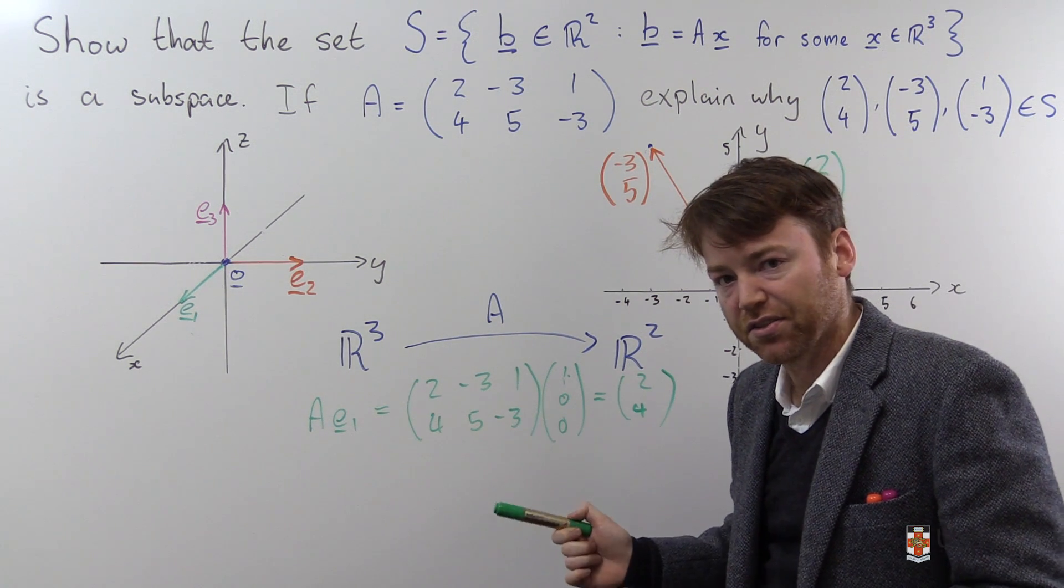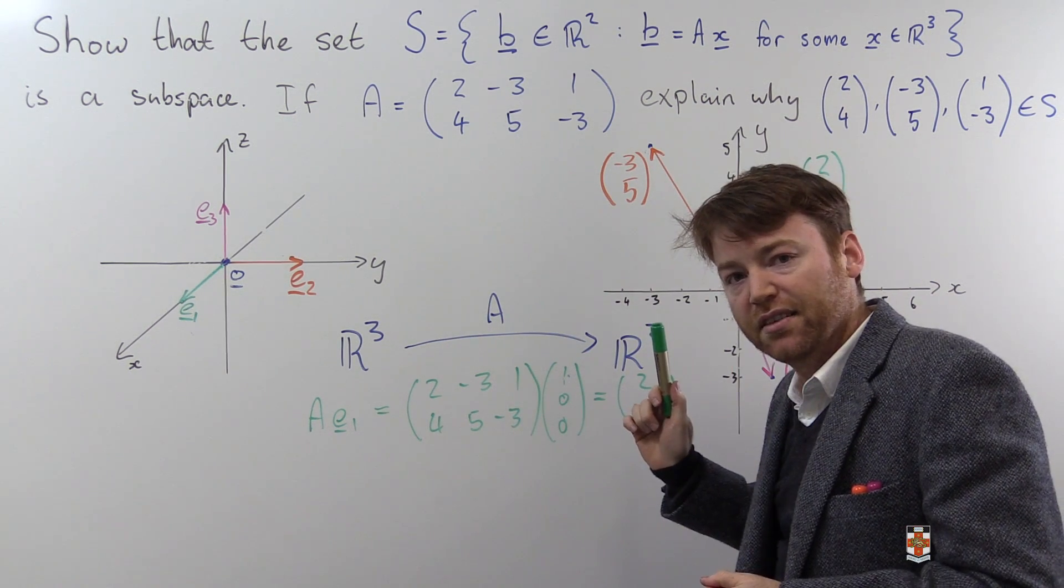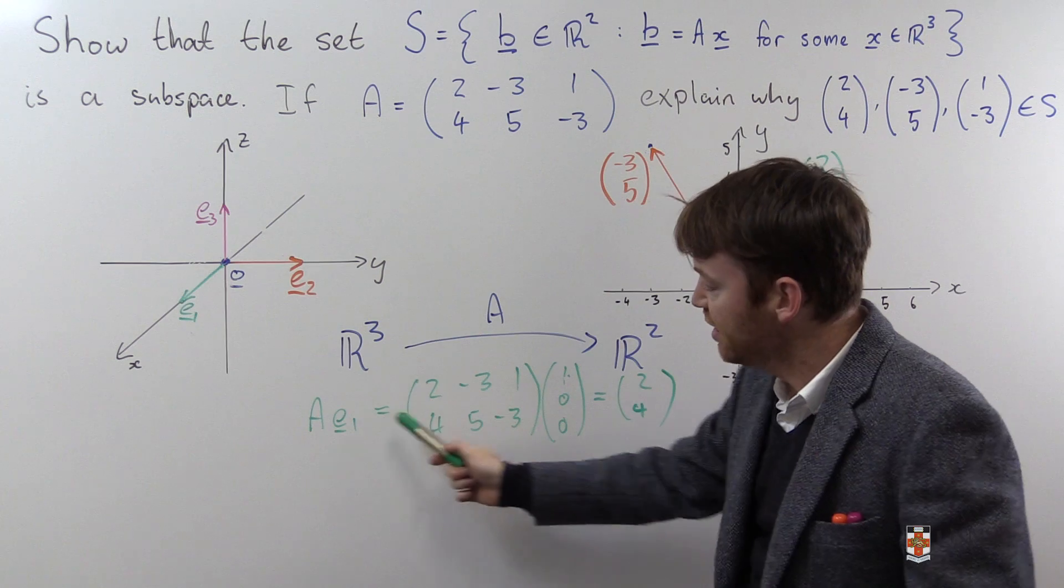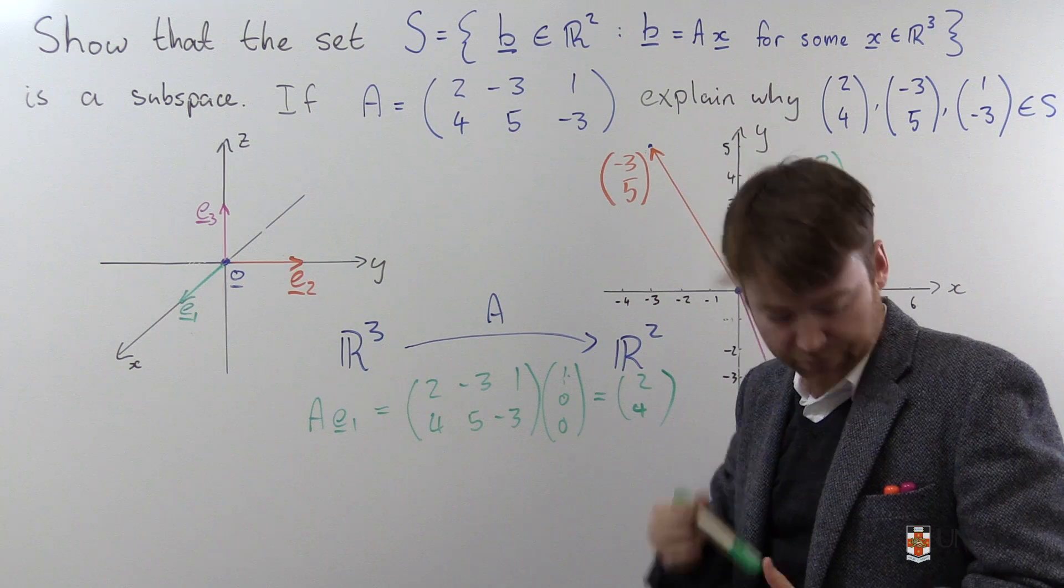What this means, as far as our set S is concerned, is that this vector 2, 4, is in S because it can be represented in this form. The matrix A applied to a vector from R3.